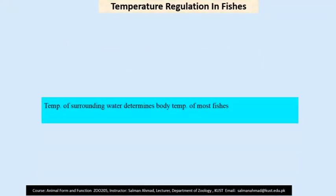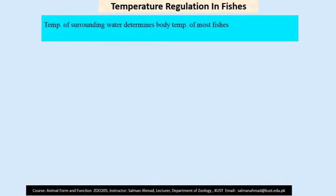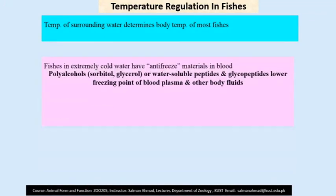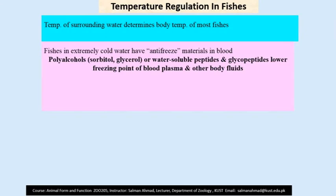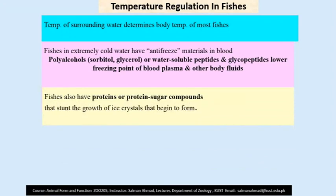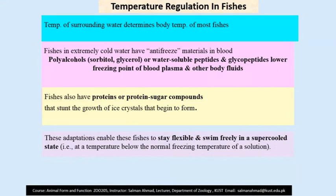Temperature regulation in fishes. The temperature of surrounding water determines the body temperature of most fishes, as fishes are ectotherms. Fish in extremely cold water have antifreeze material in their blood such as polyalcohols and water-soluble peptides and polypeptides. These compounds lower the freezing point of the blood plasma and other body fluids. Fishes also have proteins and protein-sugar compounds that inhibit the growth of ice crystal formation during and below zero degrees Celsius.